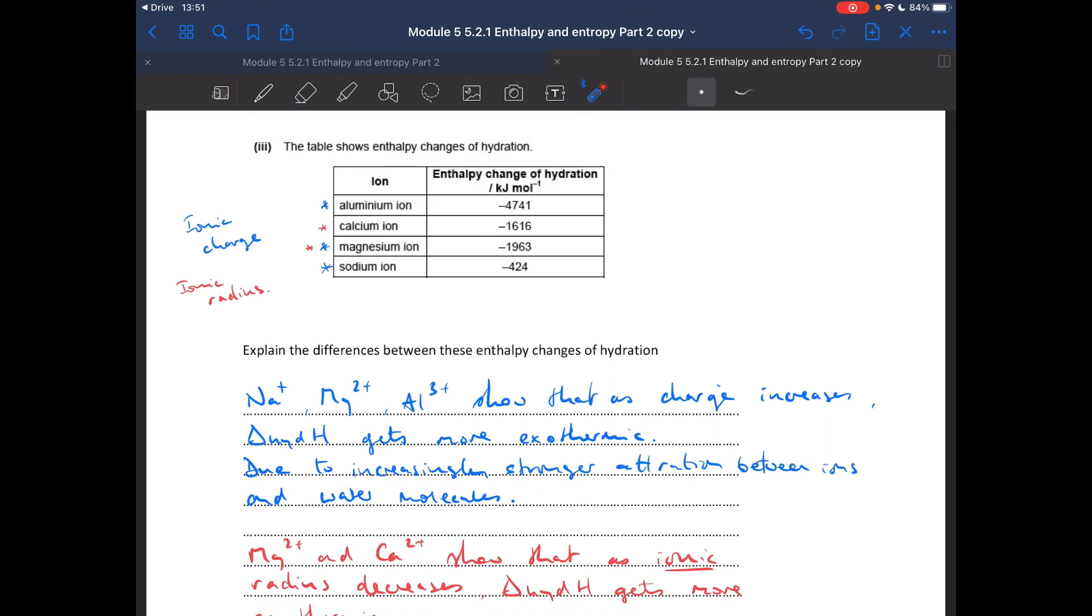So ionic charge first, these ions show that as the charge increases, the enthalpy change of hydration gets more exothermic, and that's due to the increasingly stronger attraction between the ions and the water molecules.